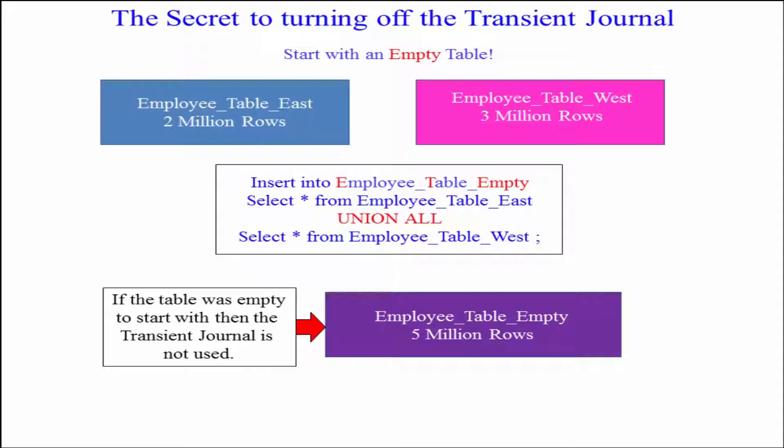Look at this example here. The whole purpose of the Transient Journal is to roll back any row that's been a problem. We have an employee table east and an employee table west. If we wanted to combine them into one table and inserted the first into the table, since the table started empty, there'd be no Transient Journal — because it's easier to just roll that back. It started empty, there's a problem, empty it out. So if you are using an empty table to start with that you're loading to, there's no Transient Journal.